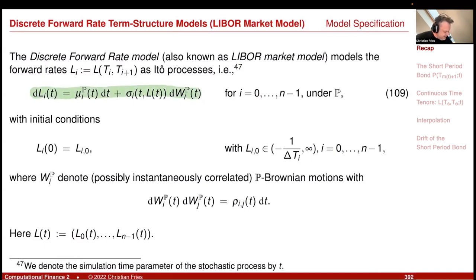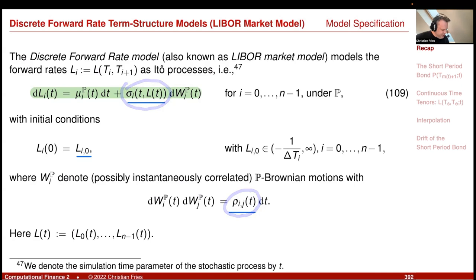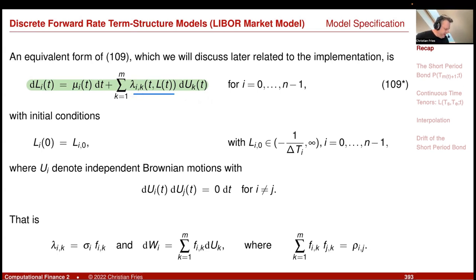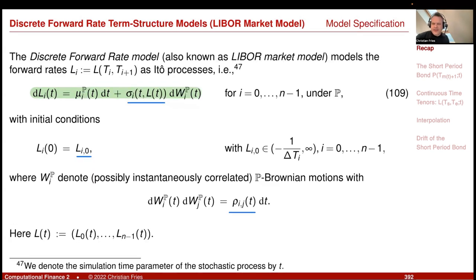We model Li as an Itô stochastic process. The model parameters are the initial value, a volatility function, and a correlation structure. There is an alternative formulation where we combine volatility and correlation into a parameter — just being the factor loading in front of independent Brownian motions. Everyone then shares the same vector of Brownian drivers but with different coefficients. The two formulations are equivalent, and the latter becomes more important later.